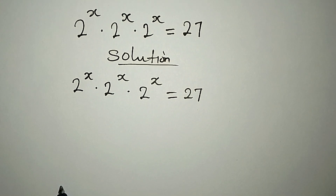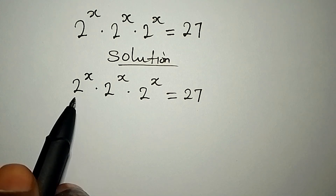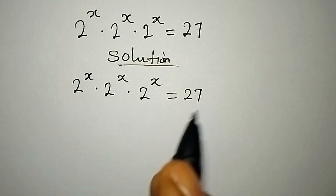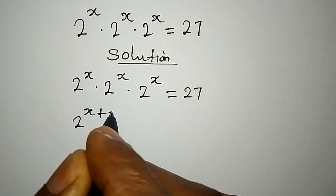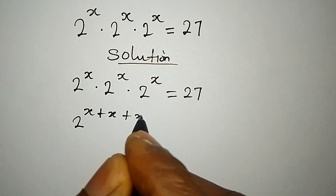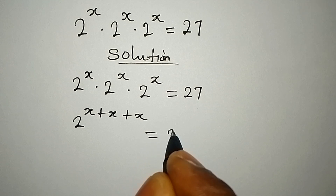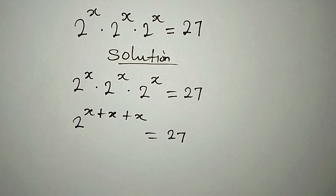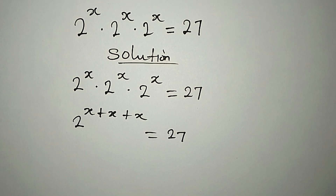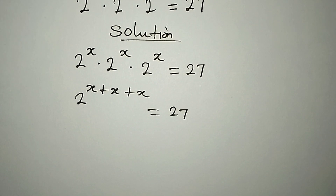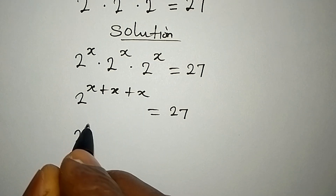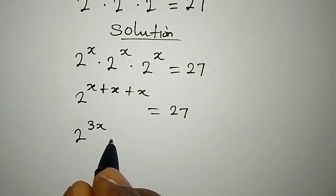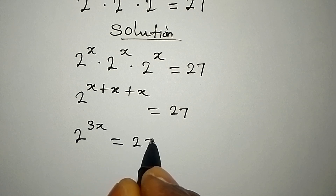Now how do we deal with this? What we are going to do is, since we are having the same base, pick one of them, and we have x plus x plus x. This is equal to 27, according to one of the laws of indices. Now 2 to the power of x plus x plus x is 3x, and this is equal to 27.